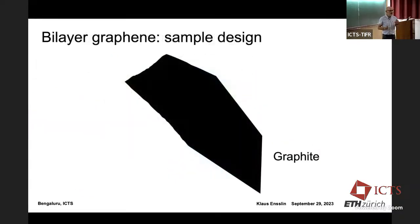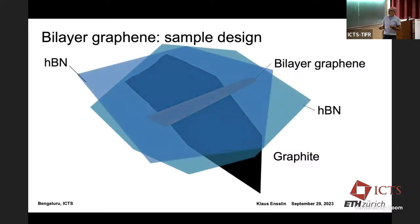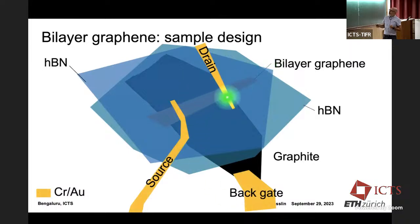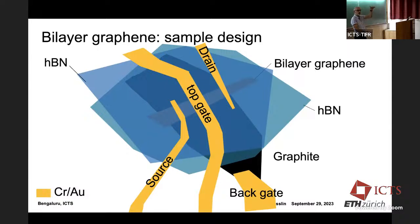Let me walk you through the technology — it's still done with sticky tape, like in the early days when graphene was invented. You start with a piece of graphite as a back gate, add hexagonal boron nitride, cover it with bilayer graphene, then another layer of hexagonal boron nitride. You etch down to the graphene, make two ohmic contacts, and place a top gate. The graphite controls from the back, giving you two degrees of freedom: the displacement field across the device, and the Fermi level position within the gap.